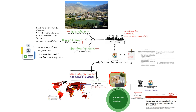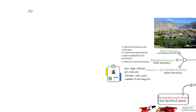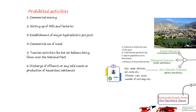Now we will see the activities that can or cannot be carried out in eco-sensitive zones. Some of the prohibited activities are: commercial mining; setting up of mills and factories that can cause air, water, soil or noise pollution; establishment of major hydroelectric projects; commercial use of wood; tourism activities like hot air balloons being flown over the national park; or discharge of effluents, solid waste, or production of hazardous substances.